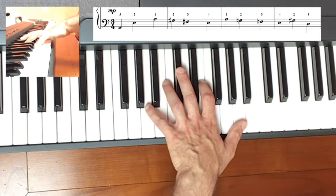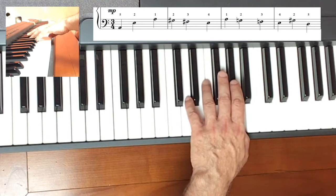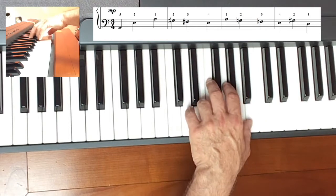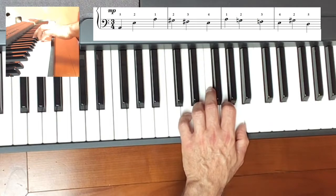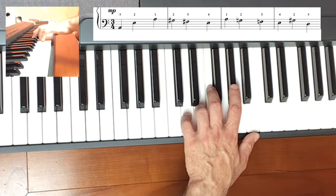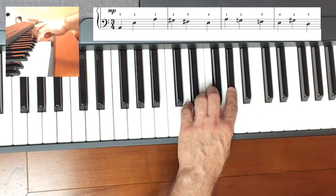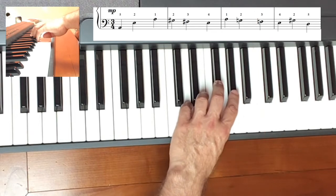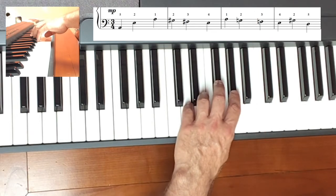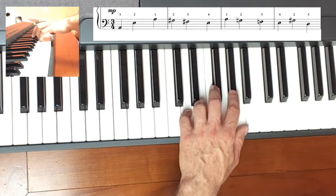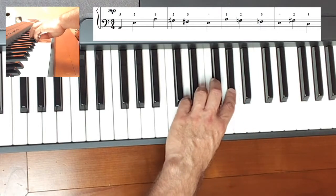Once again, A, E, A, G-sharp, F-sharp, E, then A, G, F-natural, E, G-sharp, D. And you may have noticed my thumb starting to move under the hand as I get to the G-sharp.